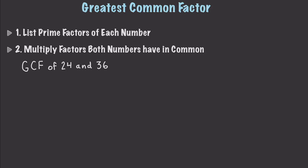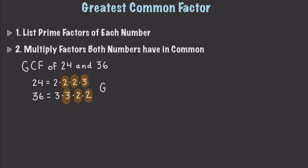We find the prime factorization of 24, which is 2 times 2 times 2 times 3. Then we do the same for 36: 3 times 3 times 2 times 2. We look for values both have in common: there's a 2, another 2, and a 3 shared between them. Multiplying those together — 2 times 2 times 3 — gives us a greatest common factor of 12.